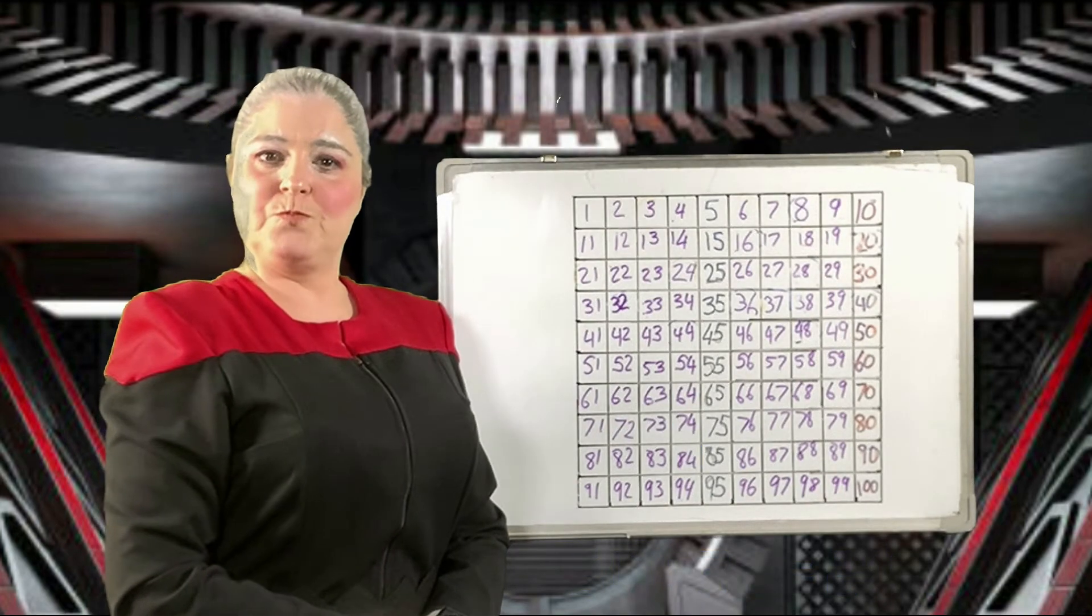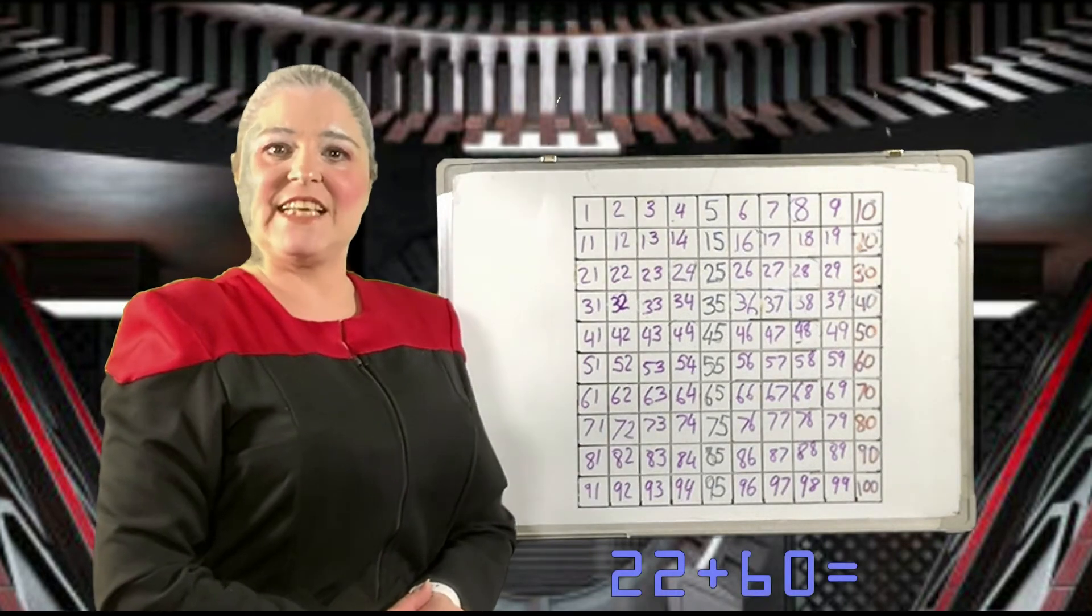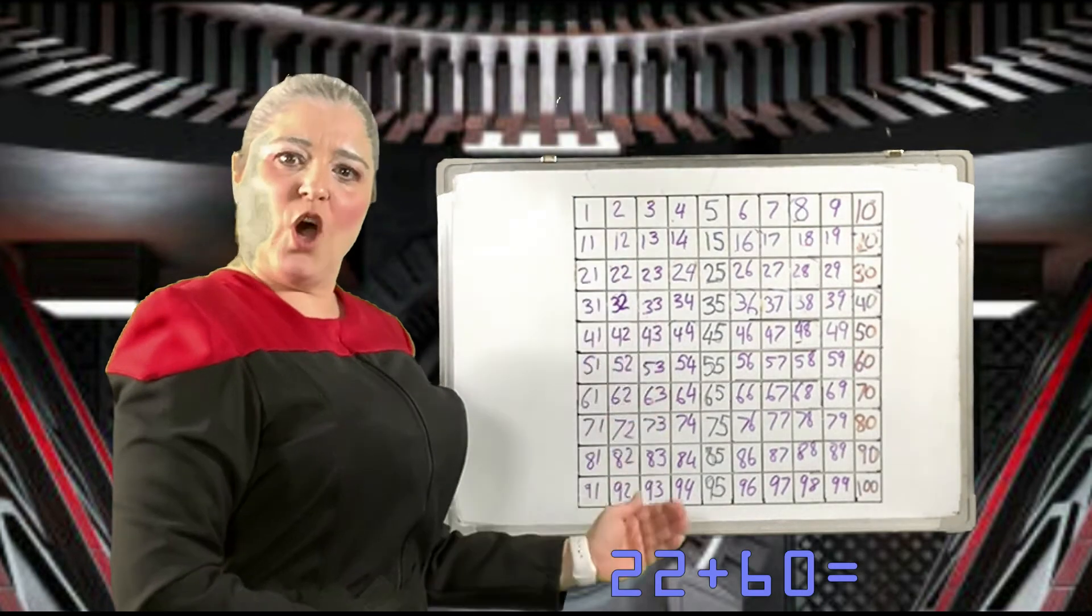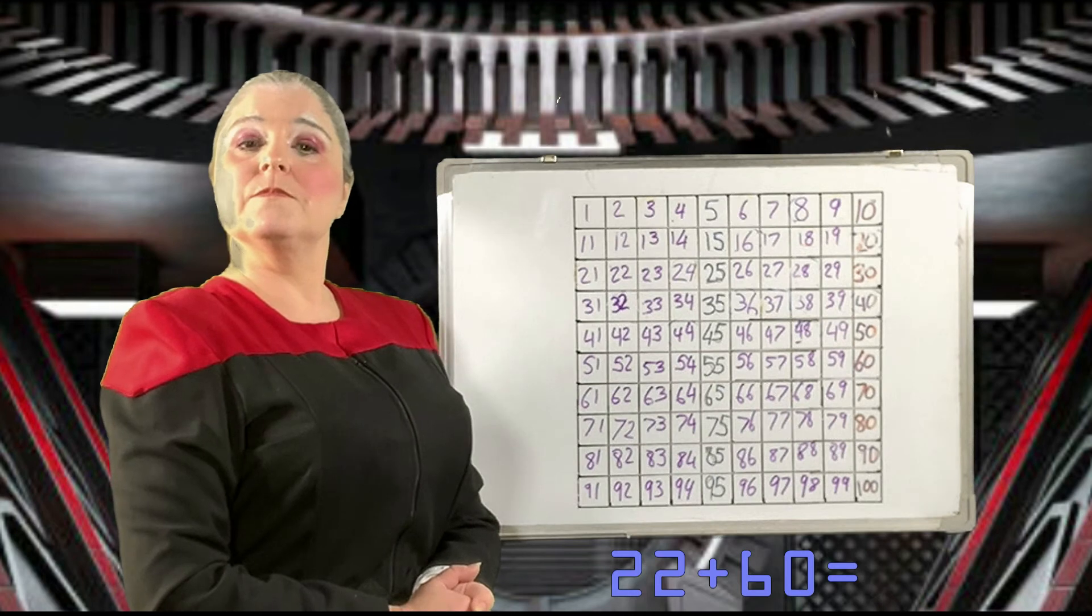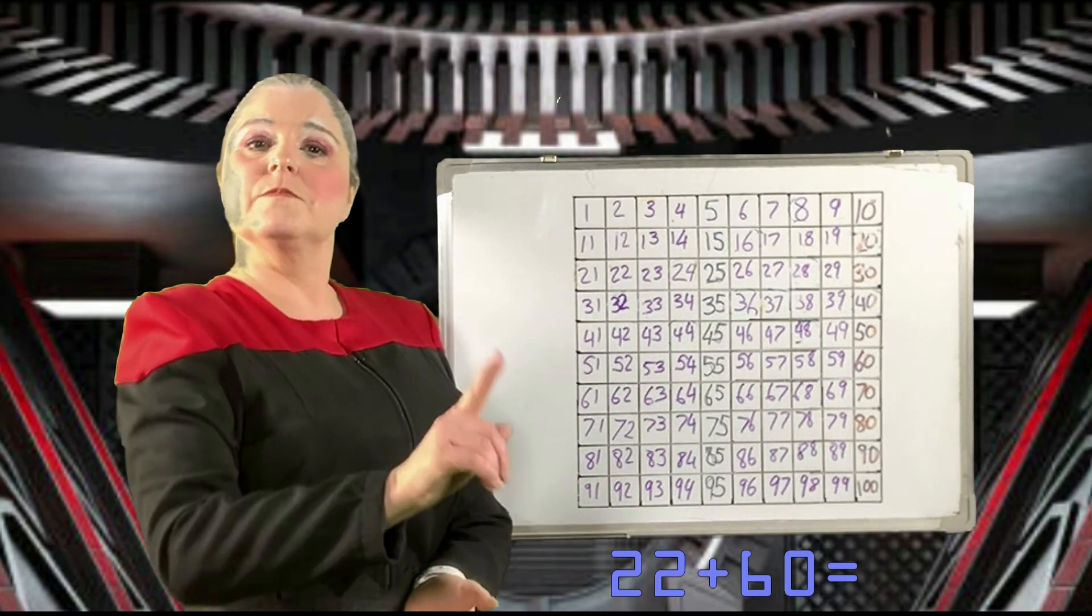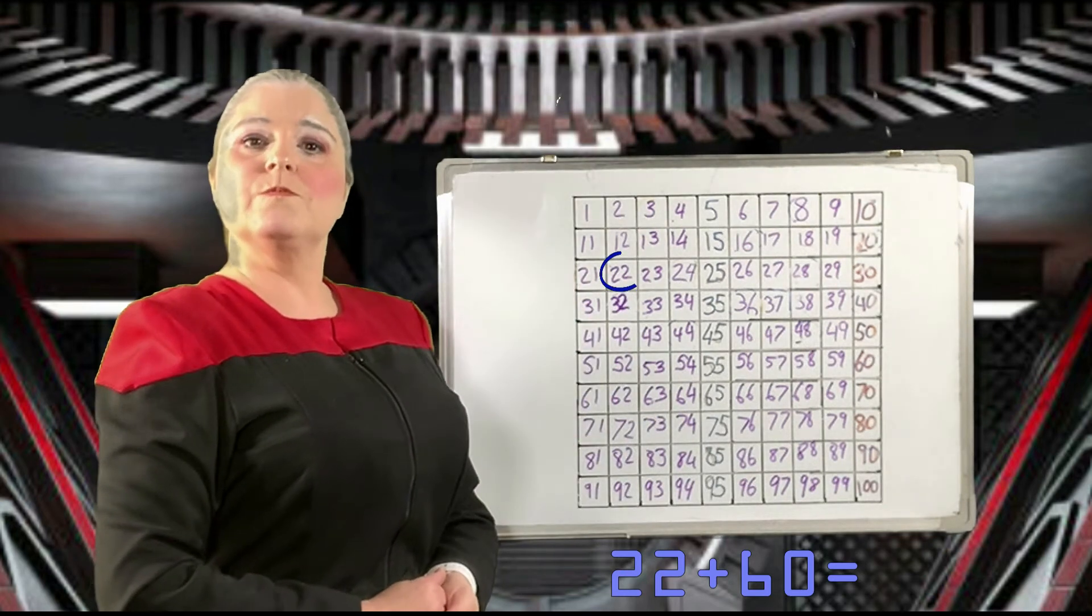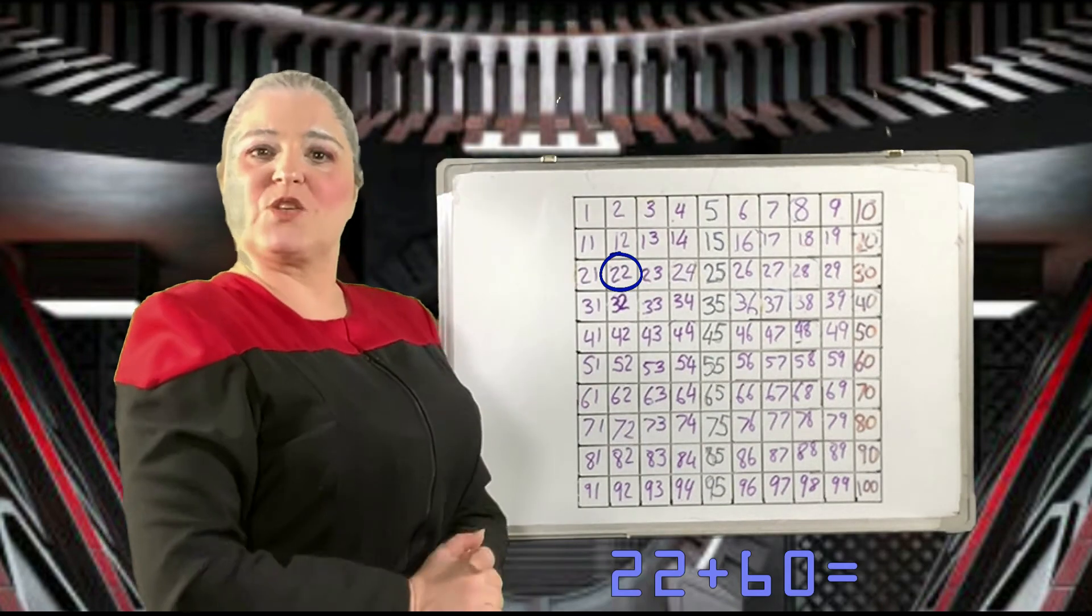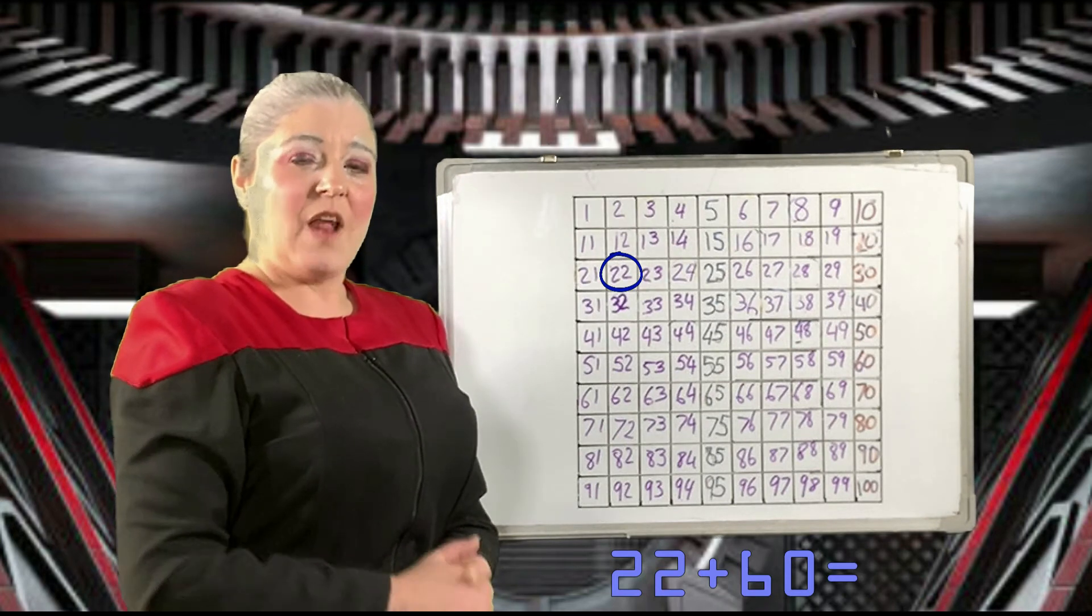Let's try one more. 22 plus 60. Write it and work it out using your number square. Very good. You've remembered to start by marking the number 22. Yes, straight down your number square. How many spaces down?